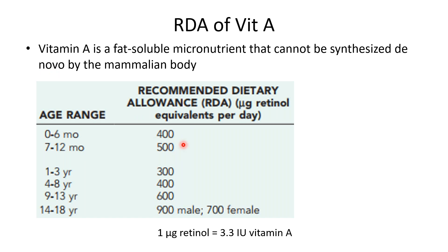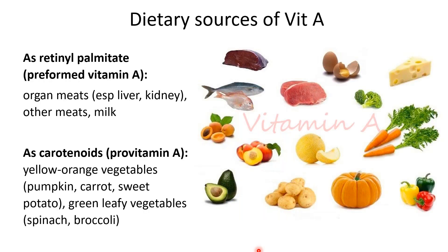One microgram retinol equals approximately 3.3 international units of vitamin A. Dietary sources exist in two forms: preformed vitamin A (retinol palmitate) found in non-vegetarian sources like organ meats, liver, kidney, milk, and eggs; and pro-vitamin A as carotenoids found in yellow-orange vegetables like pumpkin, carrot, sweet potato, and green leafy vegetables like broccoli and spinach, as well as fruits like avocado, peaches, and apricots.